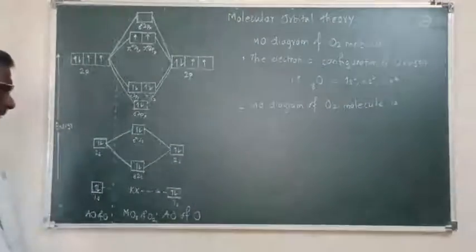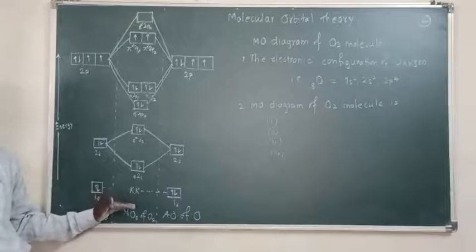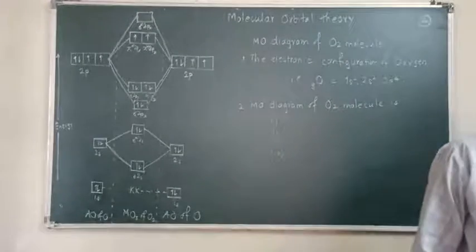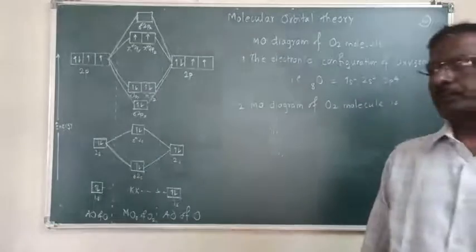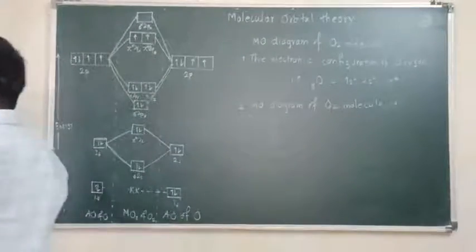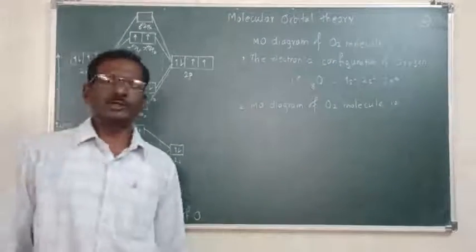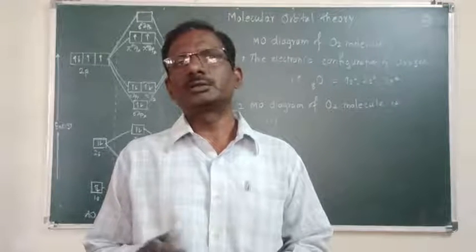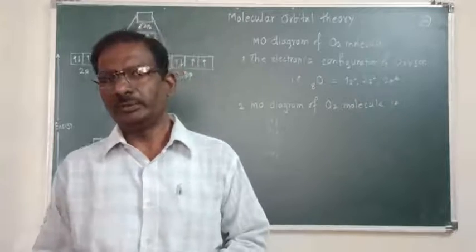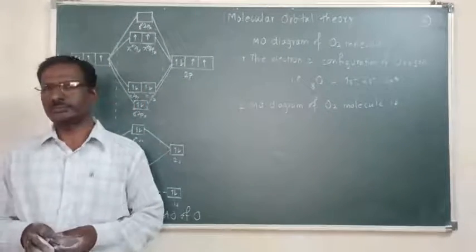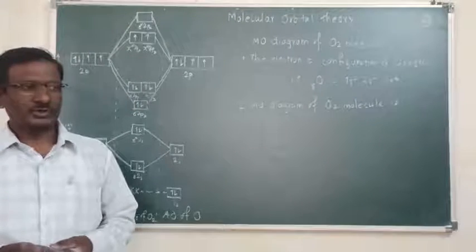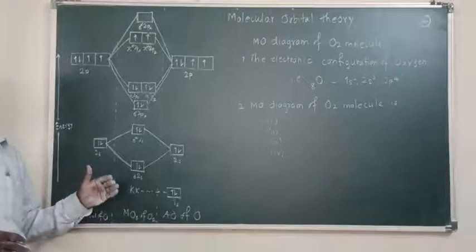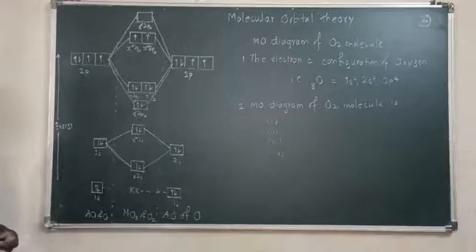Fourth point: the electrons are filled in molecular orbitals according to the Aufbau principle, Pauli exclusion principle, and Hund's rule. The Aufbau principle means electrons are filled up in the increasing order of their energy. The Pauli exclusion principle means no two electrons in an atom can have the same set of quantum numbers — their spin quantum numbers are different, with one electron filled clockwise and the other anti-clockwise. Hund's rule means electrons are filled singly first, then paired.